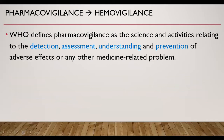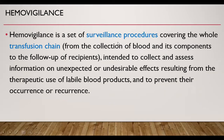There is a journey from pharmacovigilance to Hemovigilance. WHO defines pharmacovigilance as the science and activities relating to the detection, assessment, understanding, and prevention of adverse effects or any other medicine-related problem. Whereas Hemovigilance is a set of surveillance procedures covering the whole transfusion chain, intended to collect and assess information on unexpected or undesirable effects resulting from the therapeutic use of labile blood products, and to prevent their occurrence or recurrence.